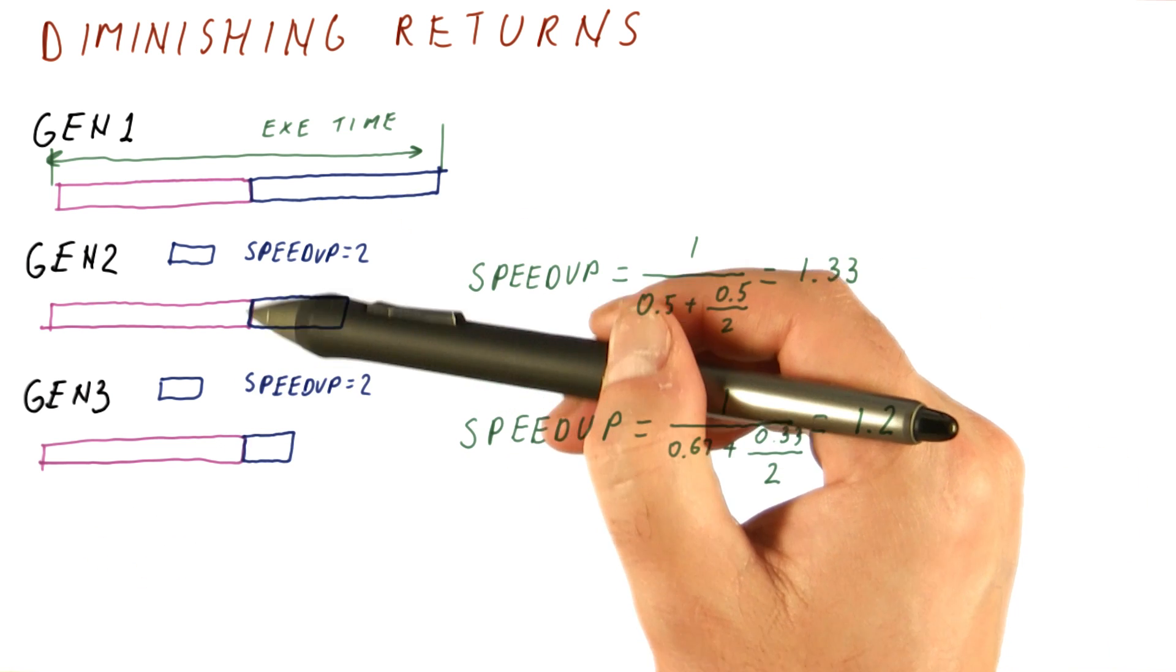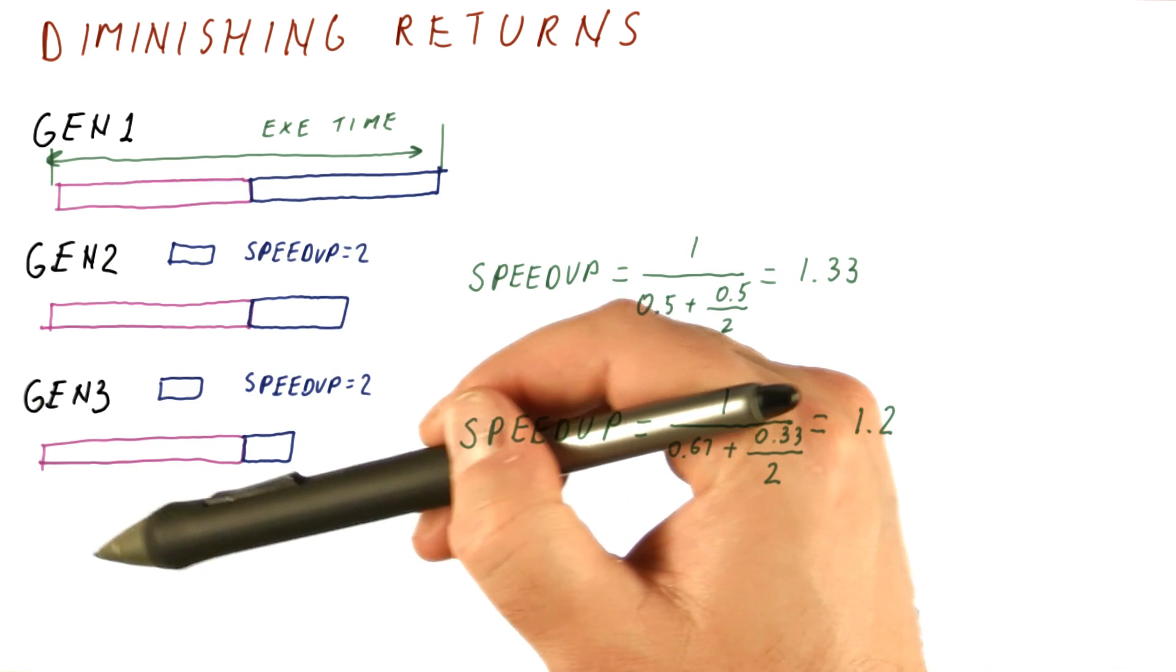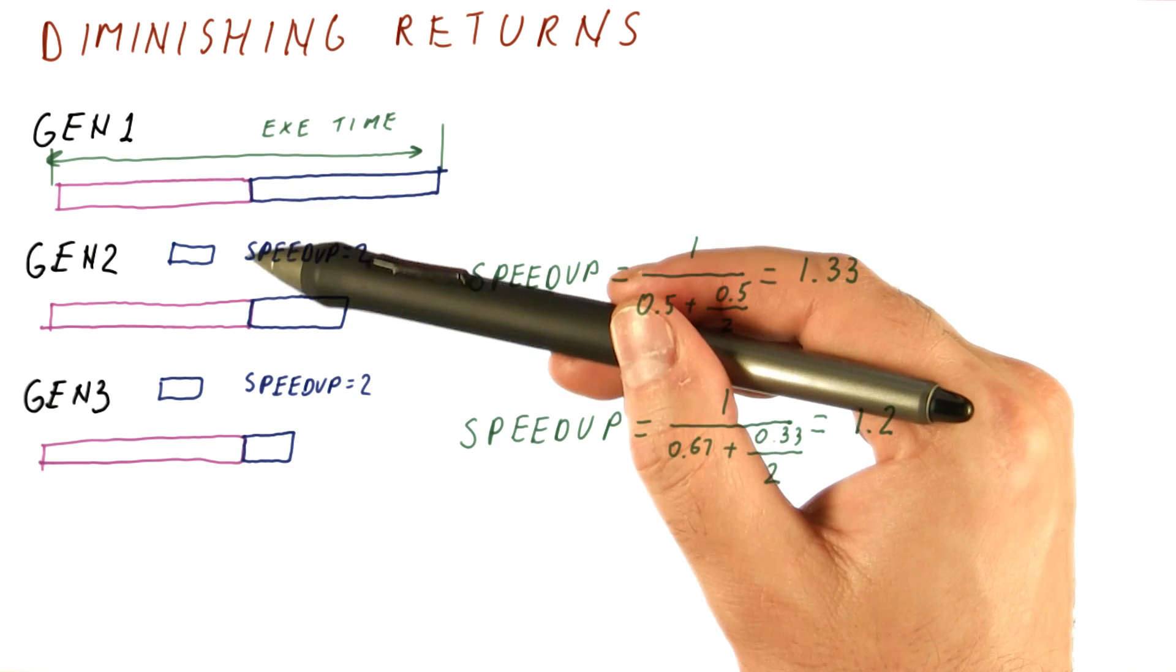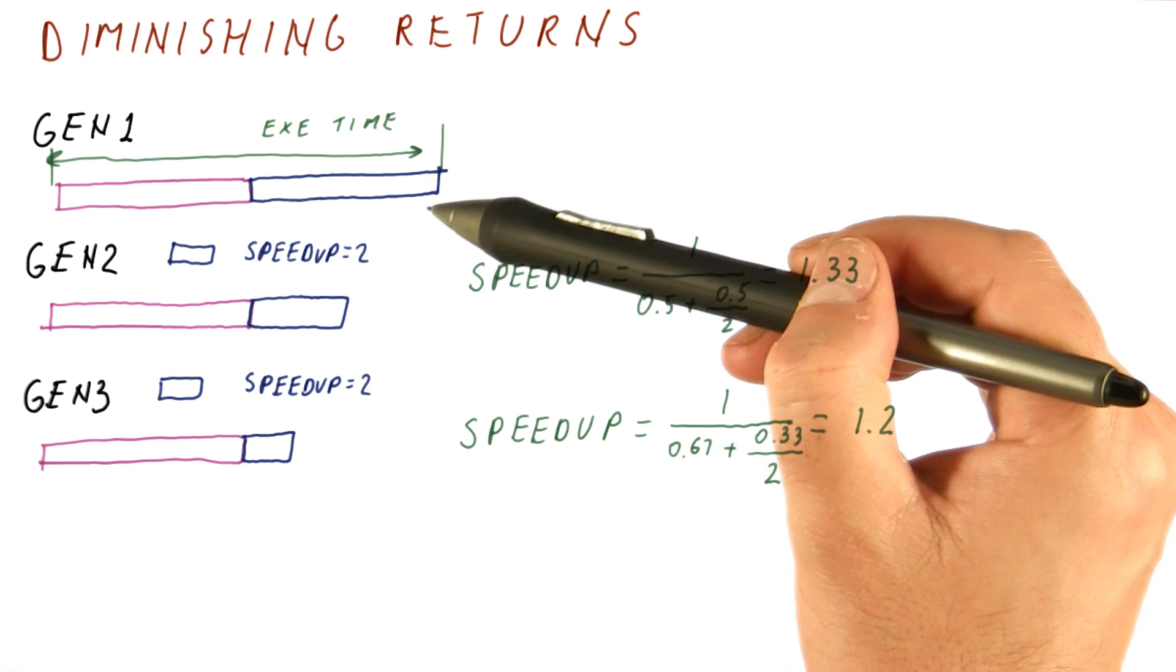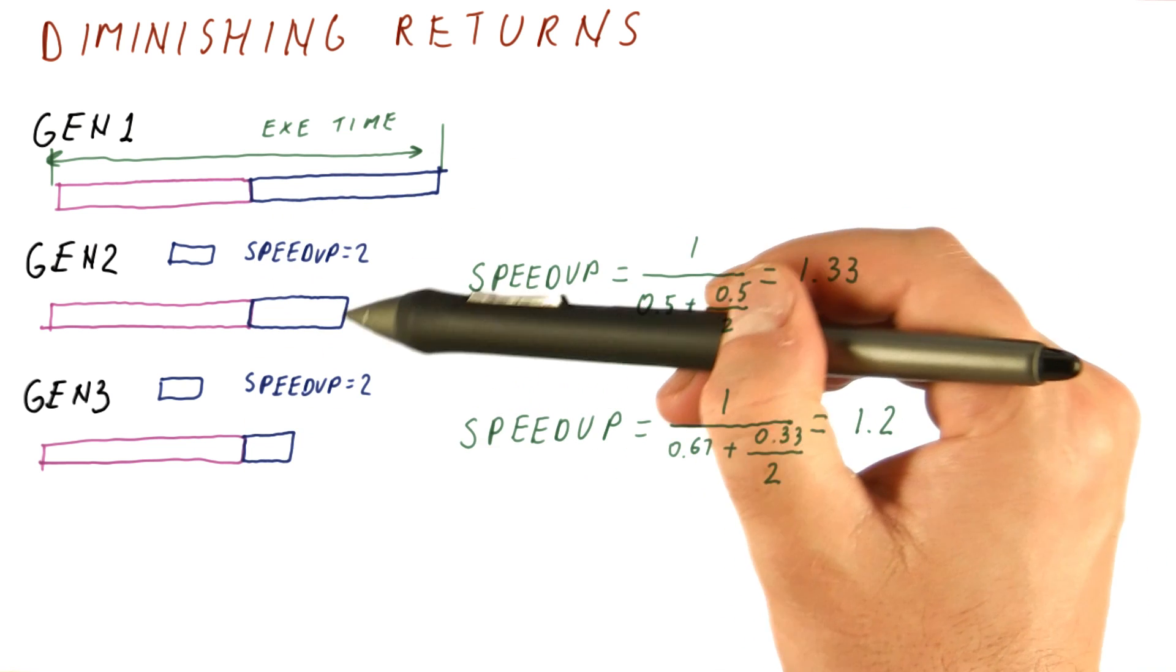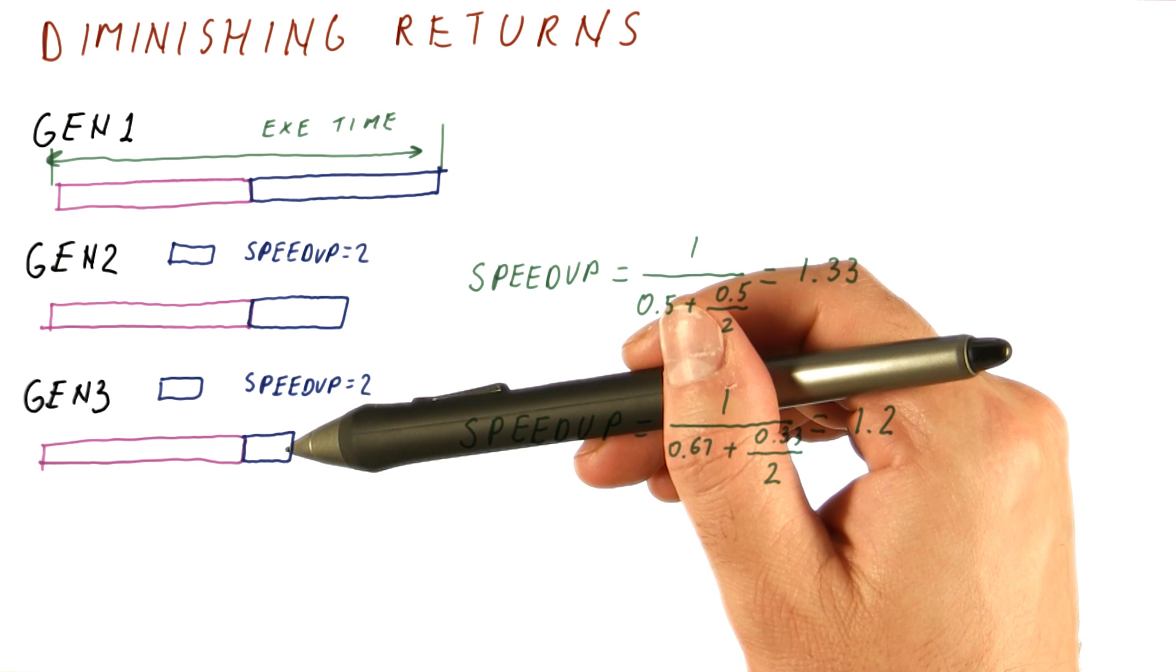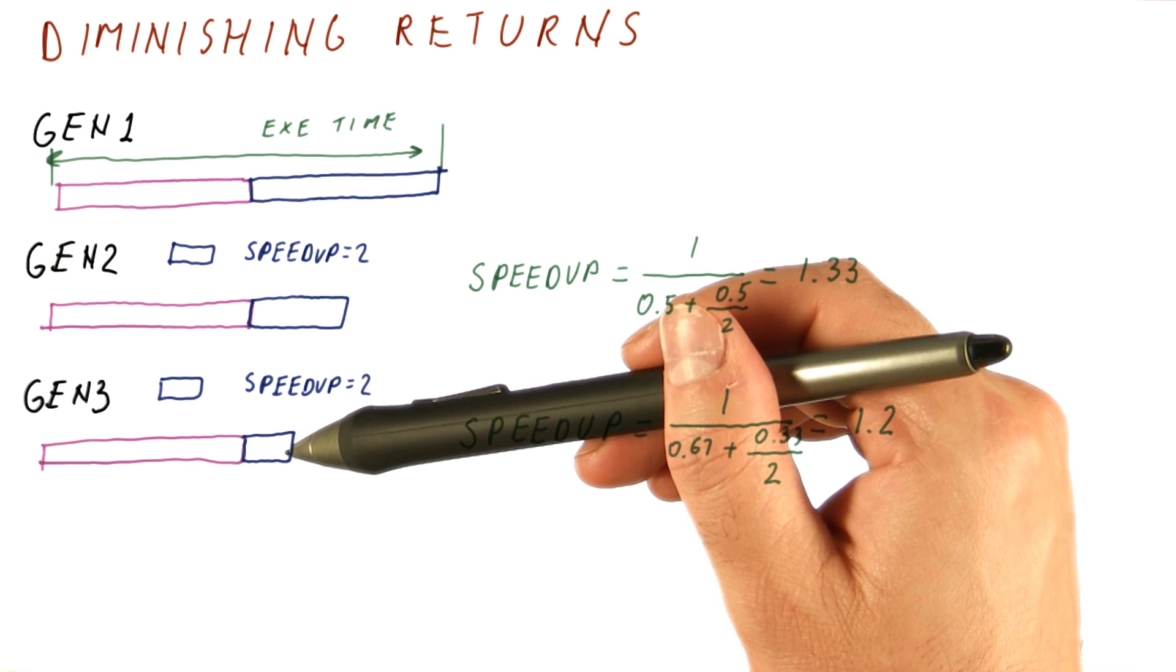So eventually, the solutions that will improve the purple part will be cheaper than the solutions that further improve the blue part, just because all of the easy stuff on improving the blue part we have already done. So not only do we get lower speedups by improving the blue part, it's actually becoming more difficult to do so.